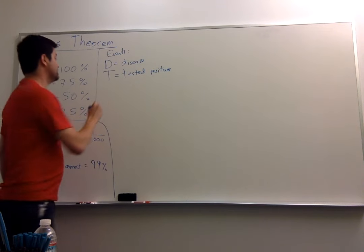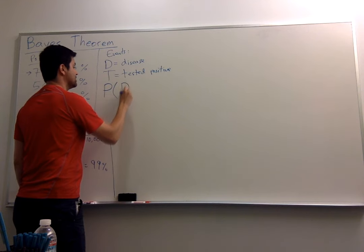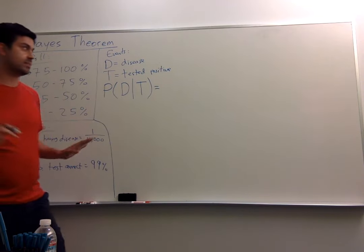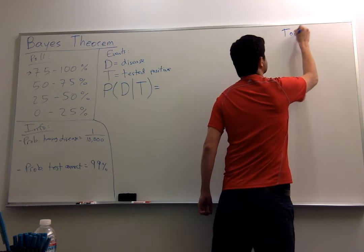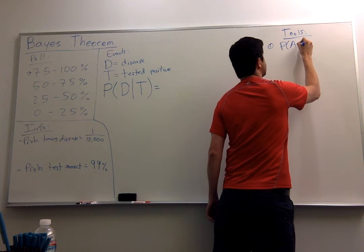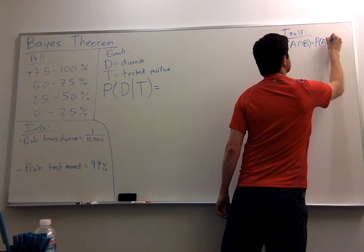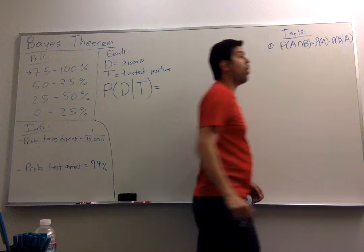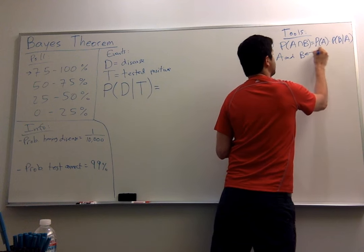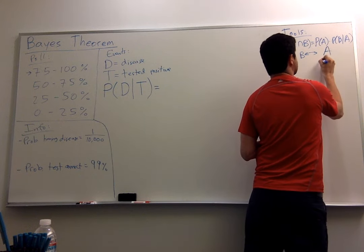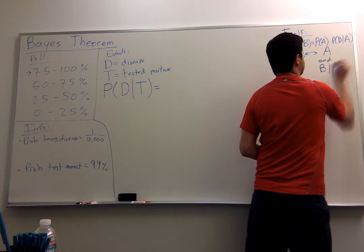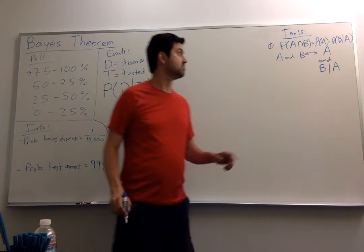What do we need to calculate? We need to calculate the probability of having the disease given that one tested positive — P(D|T). This is what we need to find. So first, let's remember some of the tools. The first tool says that the probability of A intersection B is the probability of A times the probability of B given A. Because if I want A and B to happen, that's equivalent to saying I want A to happen, and once A happens, I want B to happen. So this is Formula 1.